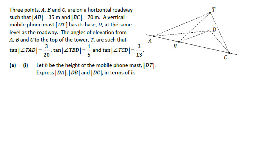The question tells us that three points A, B and C are on a horizontal roadway, as we can see on the diagram on the right, such that the length of AB is 35 metres and the length of BC is 70 metres. This information isn't on the diagram, so I'd suggest you add it in: this bit here is 35 metres, and B to C is 70 metres.